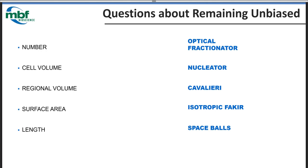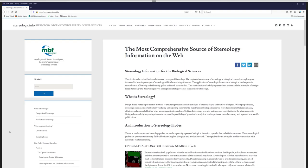We're thinking about questions on how to remain unbiased with these different probes. Here's one now: someone has used the Cavalieri volume estimator to estimate the volume of regions in the brain and is now using the area fraction fractionator. This is a type of point counting, same as Cavalieri, but instead of estimating a whole contiguous region, the area fraction fractionator estimates the percentage of different phases of the tissue. Let's go over to Stereology.info to talk about this.